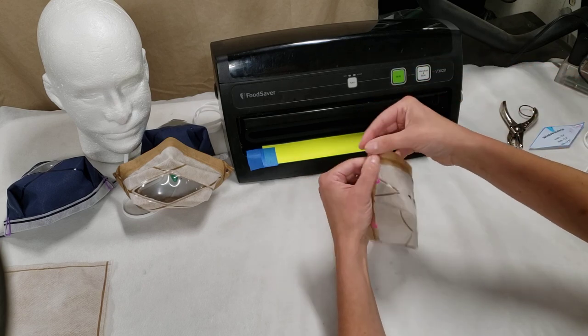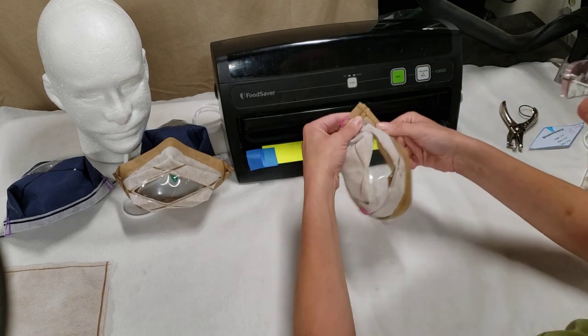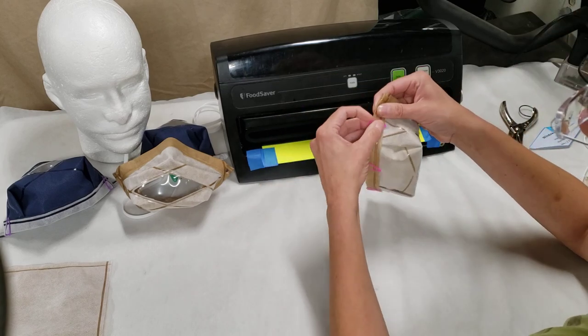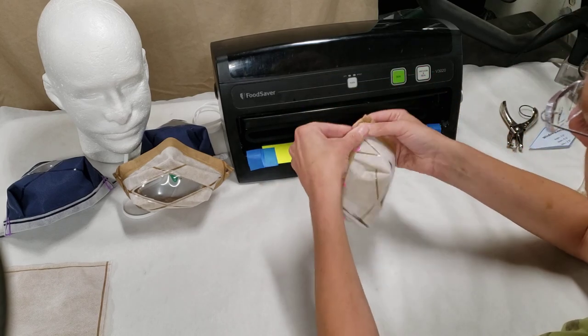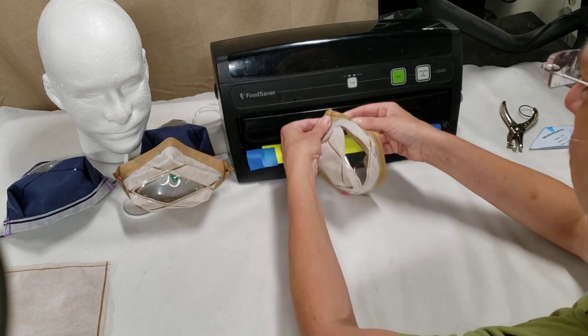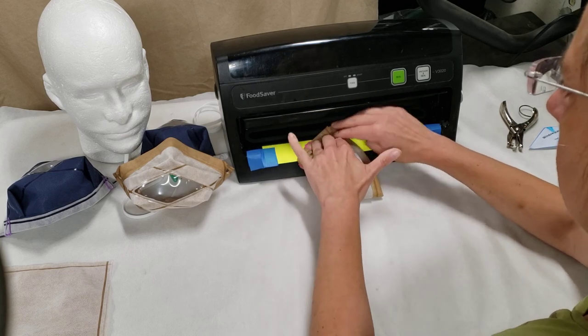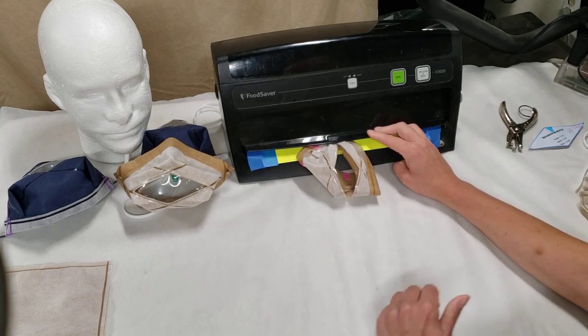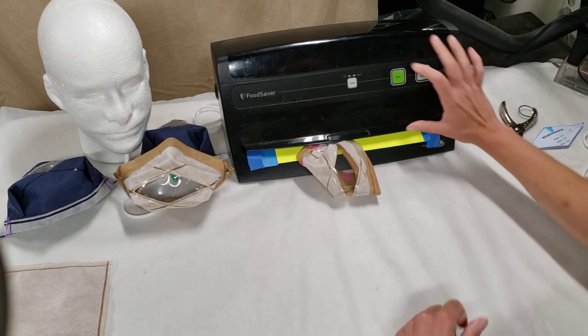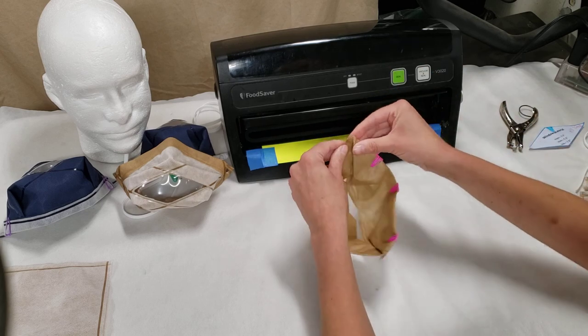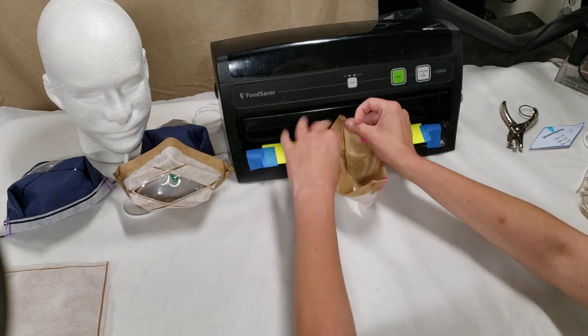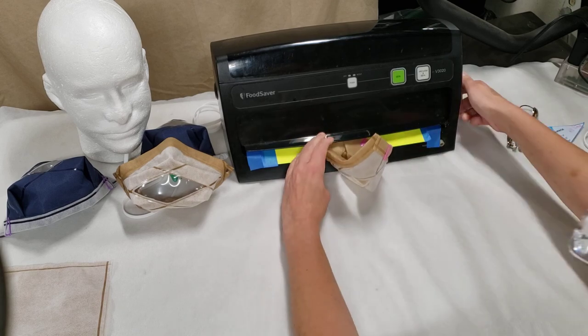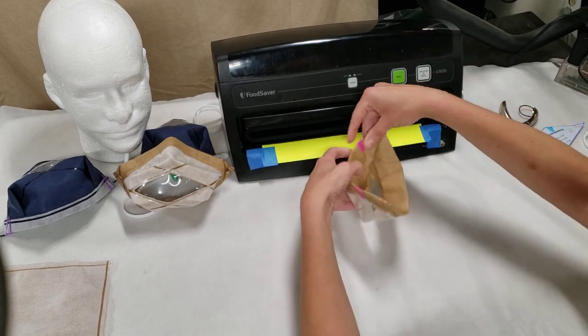If you are heat sealing your seams in place then at this point you can heat seal it in place across that top angle. I always do it both right side up and right side down to make sure that that is really secure. And I do that on both sides.